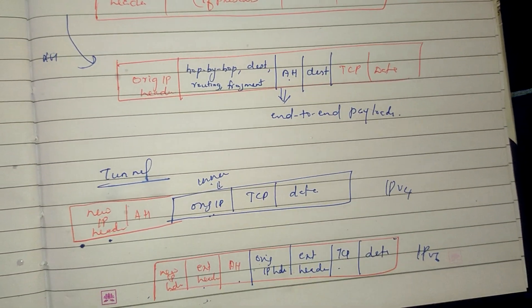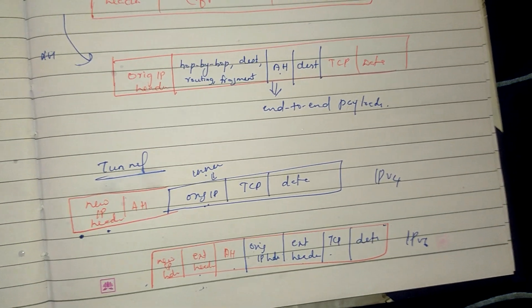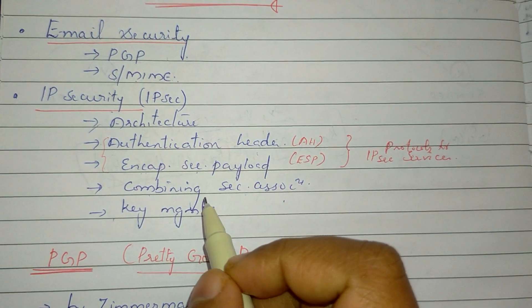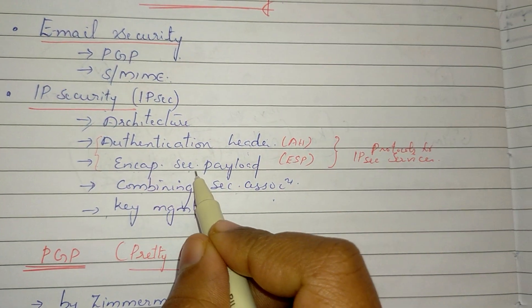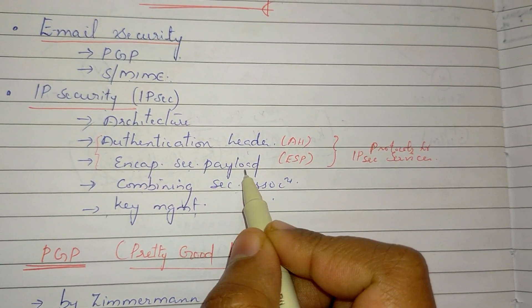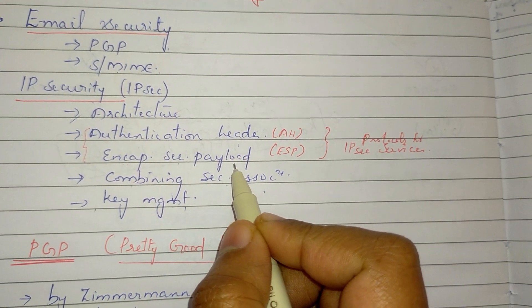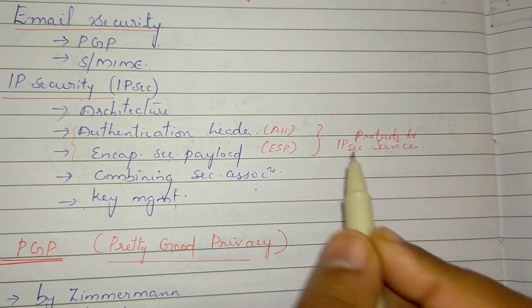This is the authentication header. Next, we will learn the next protocol: Encapsulating Security Payload, ESP. That is in the next video.